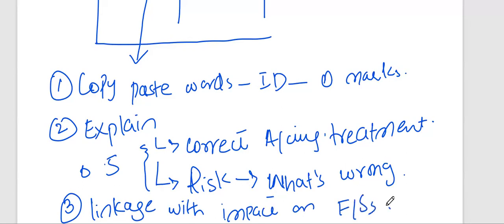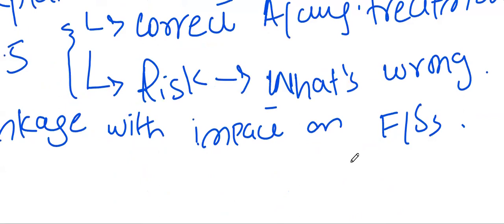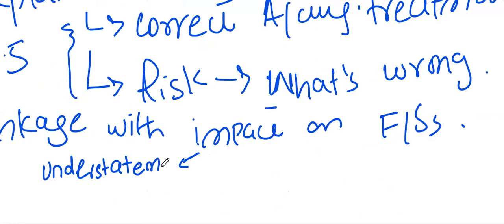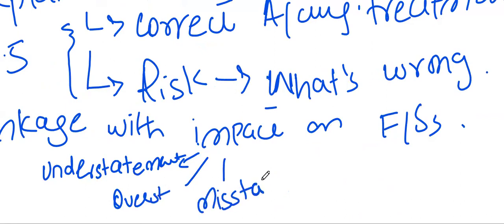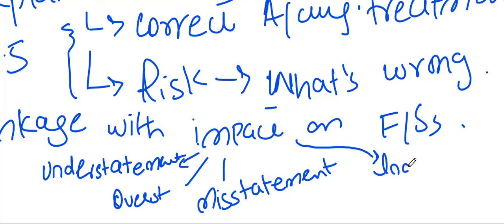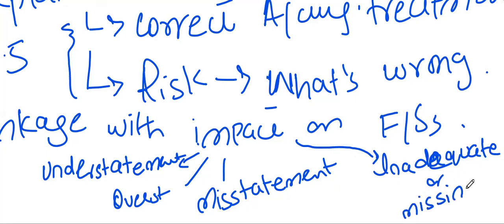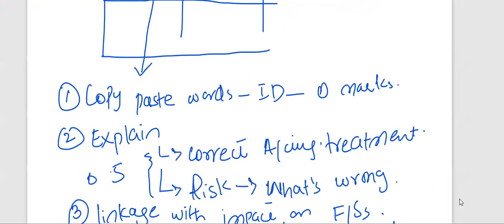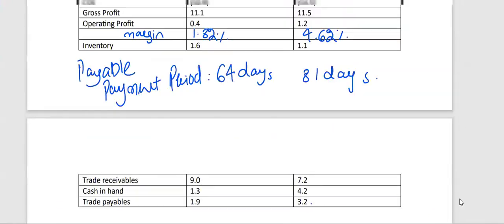The impact on financial statements can take three forms. If discussing amounts, you can use: understatement, overstatement, or misstatement. Do not use the word 'misstatement' where overstatement or understatement is specifically expected — use each word correctly. For problems with disclosure, you can say the disclosure may be inadequate or missing. Keeping this in mind, let's start solving the question using this exam technique.